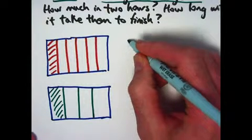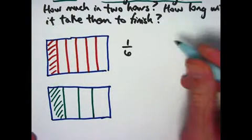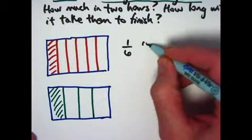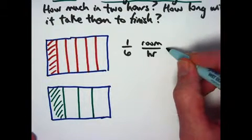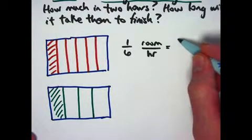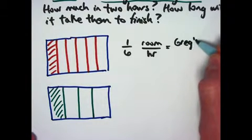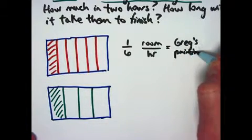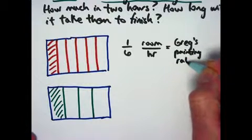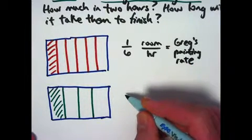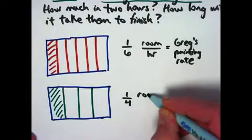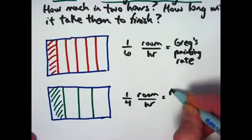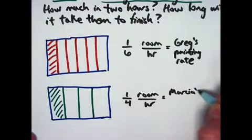Let's put down some numbers here. Greg can paint 1 sixth of the room per hour. We can think about units here. That's how fast Greg can paint. You might call that Greg's painting rate. So the same room here for both Greg and Marsha. It's the same size, same room. Marsha can do 1 fourth of the room per hour. That would be Marsha's painting rate.